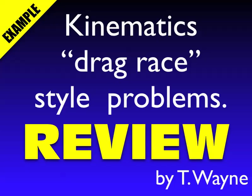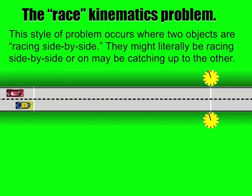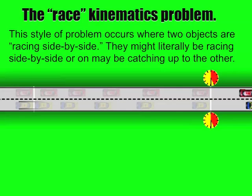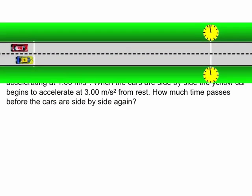This video is going to show you how to solve a race-style problem in kinematics. A race-style problem is when we have two bodies side-by-side. In the simplest form, they start together at the same time and end together. They cover the same distance at the same time. That's the kind of problem this video is going to talk about.